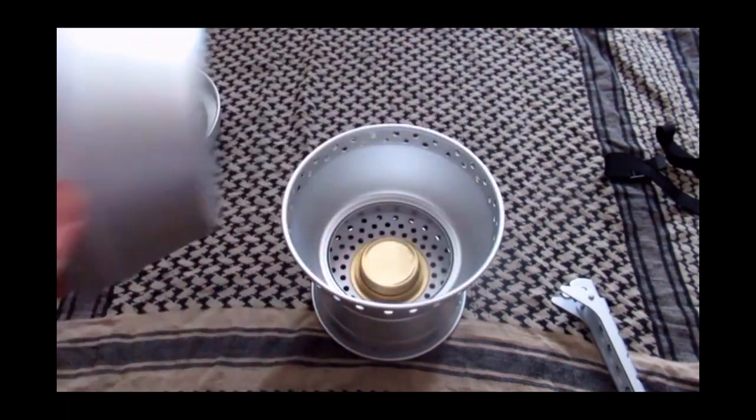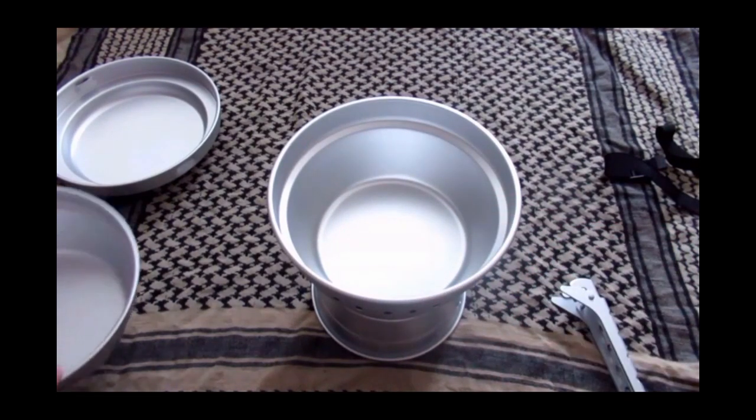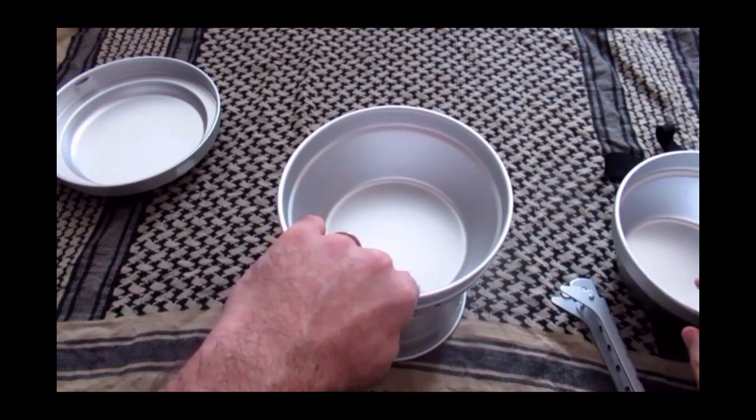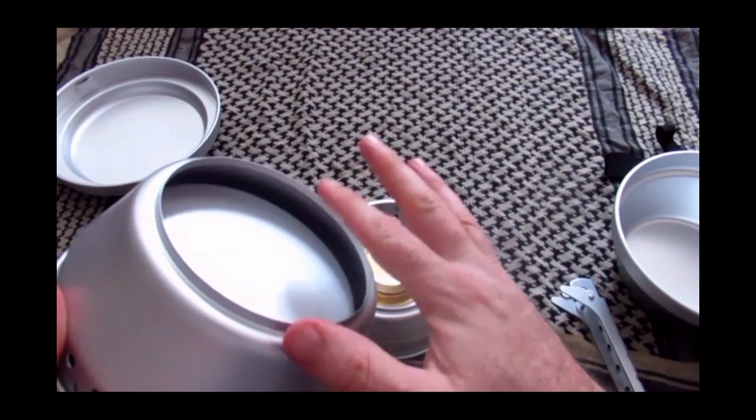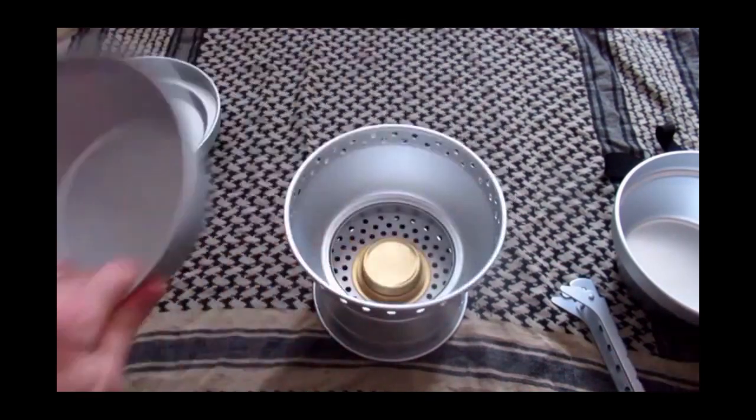And then your pots just sit on top there nice and easy. The rim around the outside just holds them nice and secure, and you can see there once it's filled in, you've got like that perfect inch height gap that you need from the burner to the underside of the pot.